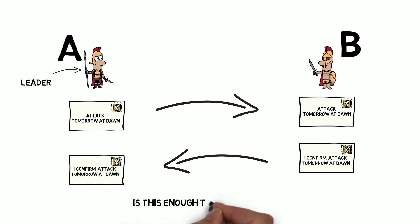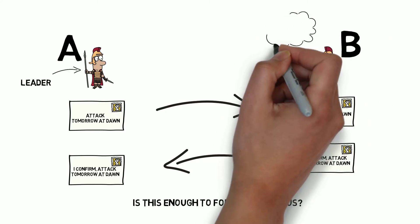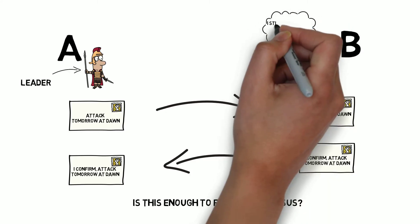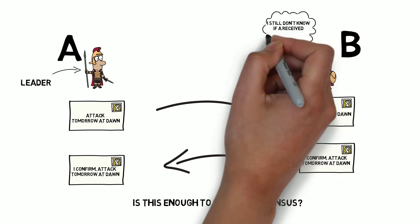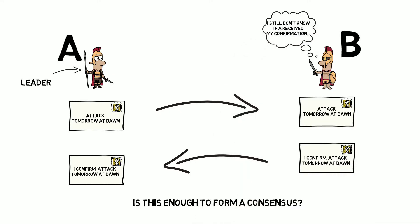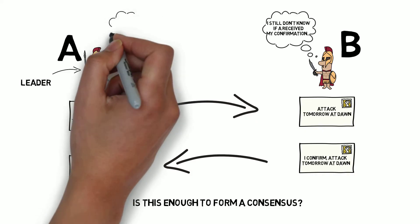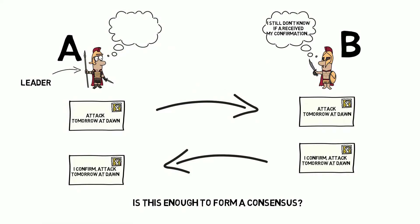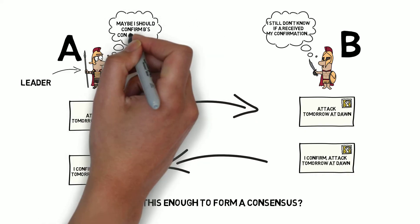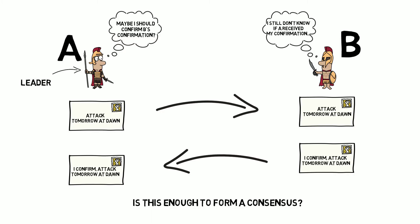A receives B's confirmation. Is this enough to form a consensus between the generals? Unfortunately not, as general B still doesn't know if his confirmation was received by general A. Okay, so what if general A confirms general B's confirmation? Then of course that confirmation has to be also confirmed, and we end up with an infinite exchange of confirmations.